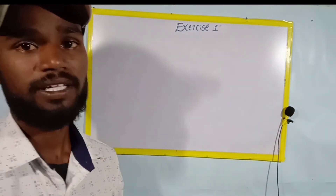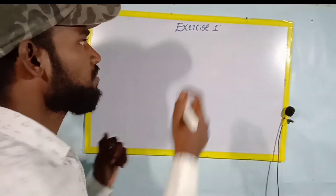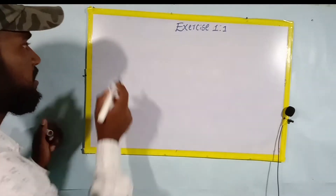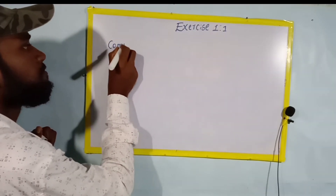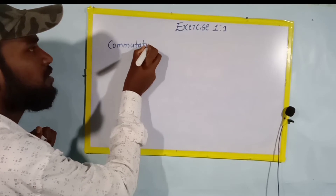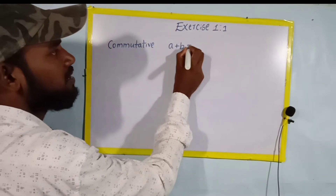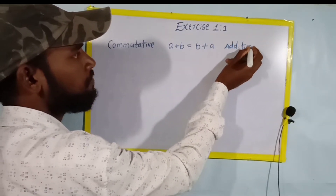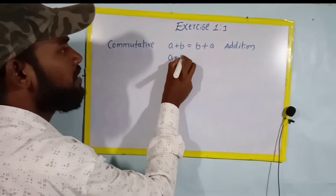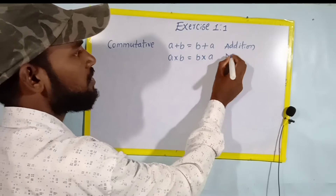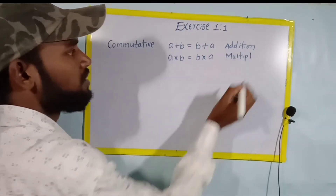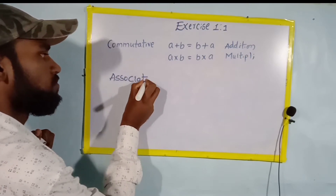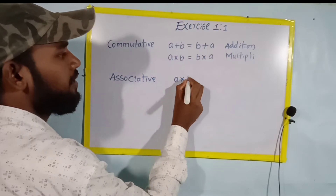Today we are discussing Exercise 1.1 problems. Before that, I will explain some properties. First is the commutative property: a plus b is equal to b plus a, for addition. Next, a into b is equal to b into a, for multiplication.